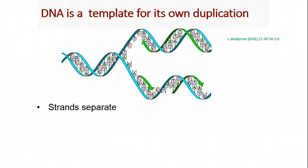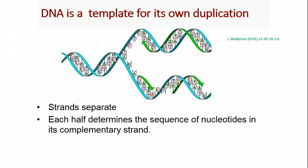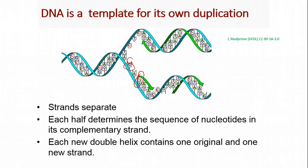So the way DNA is replicated, strands are separated. Each half of the strand determines the sequence of nucleotides in its complementary strand. Complementary strand means the strand that is being newly synthesized. So we have a G, we know the complement is a C. So that'll be the complementary strand. Each new double helix contains one of our original strands and one newly synthesized strand.